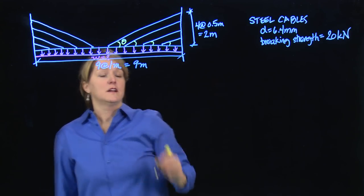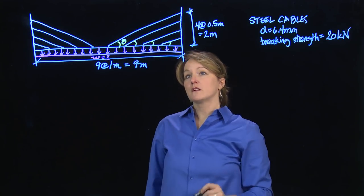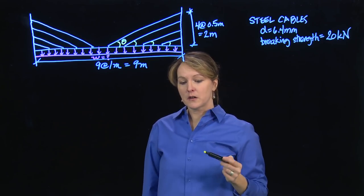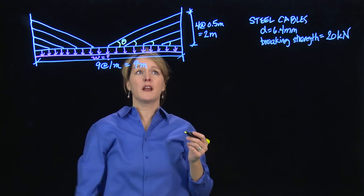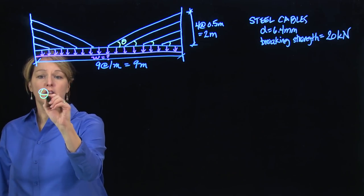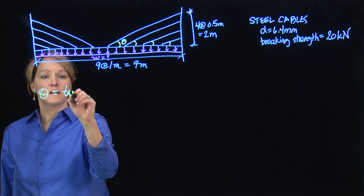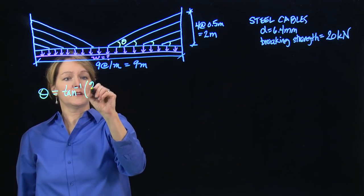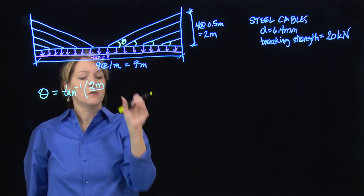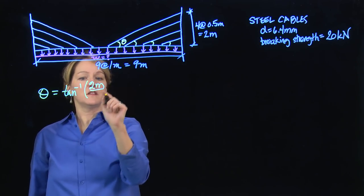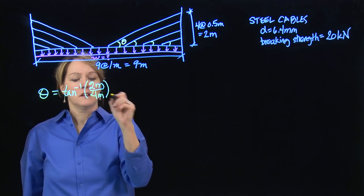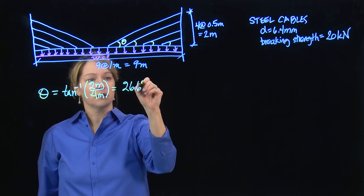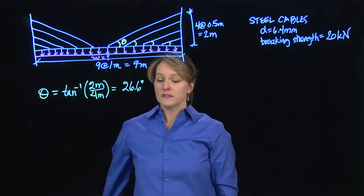So all these angles turn out to be the same. They have the same ratio of height to width, and that tends to be the case with the harp design. I can figure out what that angle is. So that angle theta is going to be the inverse tangent of the height of 2 meters divided by the width. The width out to this cable in the middle is 4 meters, and so that tells me that that angle is 26.6 degrees. And that's going to be the angle of all these cables.